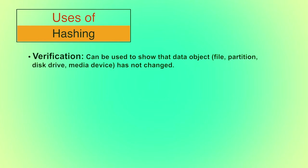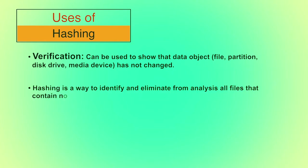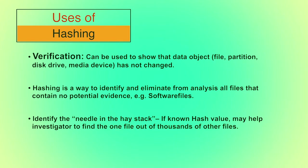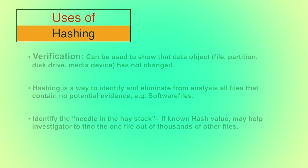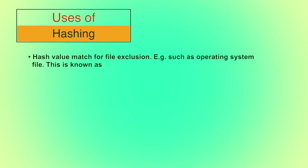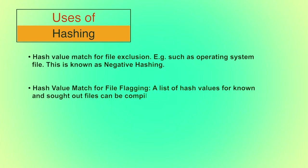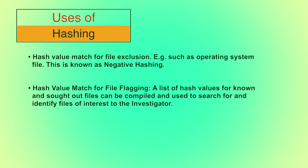Uses of hashing: we can use hashing for verification — to show that a data object has not changed. It specifically helps forensic experts while producing evidence in court of law. Hashing is also a way to identify and eliminate from analysis all files that contain no potential evidence, for example software files. It helps identify one file out of thousands — this is hash value match for file exclusion, also known as negative hashing. Hash value match for file flagging is a list of hash values for known files that can be compiled and used to identify files of interest to the investigator.